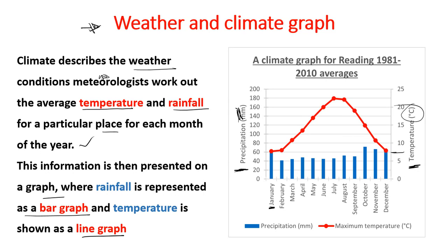For example, for July, the temperature is around 22.5 degrees Celsius, but the rainfall for that same July is around 42 millimeters. You should not make the mistake of taking data for precipitation to represent temperature. Always take note of how the units are arranged on the graph.